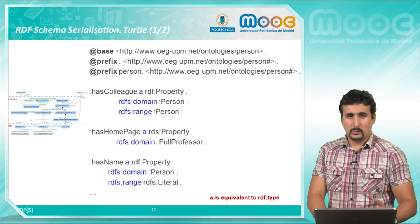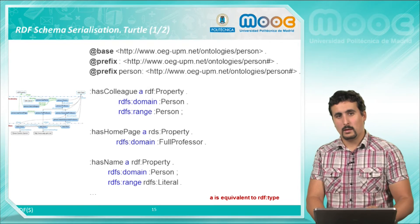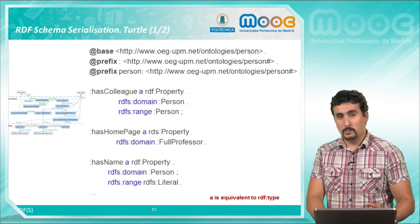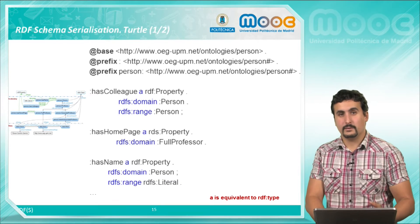We can also use the Turtle syntax which is more compact and clear when reading the document. When we use 'a' in triples it is a way of saying RDF type, it is the short form of RDF type.